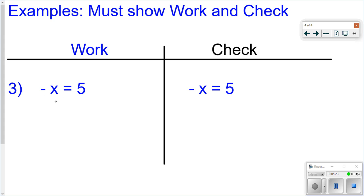If you have a negative x, we don't want to know what negative x is equal to. We want to know what x is equal to. So how do we get rid of that negative sign? Well, what you're really looking at here is negative 1 times x. So use opposite operations. So negative 1 times x, that means you want to divide both sides by negative 1. So negative 1 divided by negative 1 is positive 1, cancels it out. And then 5 divided by negative 1 is negative 5.